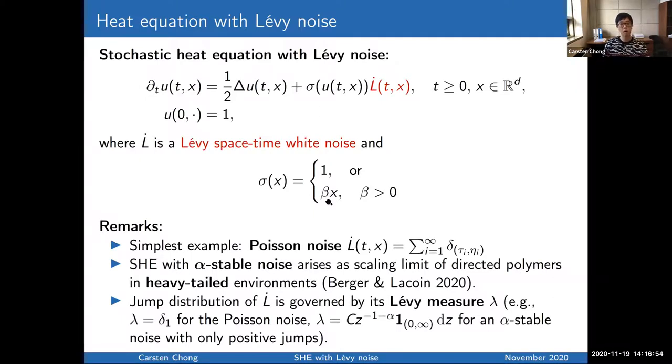If you're not familiar with Lévy space-time white noise, let me give you a few examples. So the simplest example is the case of Poisson noise. In that case, the noise is just a sum of Dirac delta masses that you put at space-time locations determined by a Poisson point process. Another important example is alpha-stable noise. Actually, in a recent paper by Bakshi and Laquan, they have shown that the stochastic heat equation with a multiplicative alpha-stable noise arises as certain scaling limits of directed polymer models in a heavy-tailed environment. What you have to remember for the remaining part of this talk is that the jump distribution of this noise is governed by its so-called Lévy measure lambda. For example, if you have the Poisson noise, lambda is just the Dirac at one. So you have jumps always of size one. If you have an alpha-stable noise, the Lévy measure is given by this power law density here.